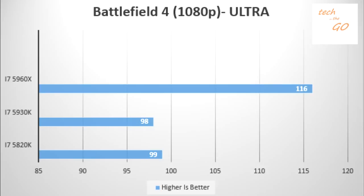Now let's go to gaming benchmarks. On Battlefield 4 at 1080p resolution with ultra settings, the i7-5960X runs at 116 frames per second, the i7-5930K at 98 frames per second, and the i7-5820K at 99 frames per second, which is quite good.